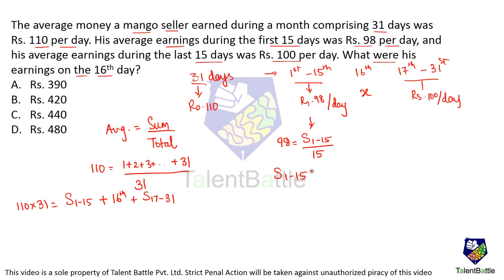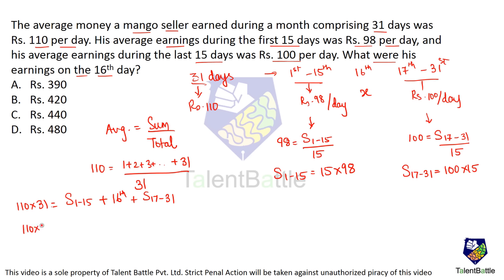Summation of the first 15 days = 15 × 98. Summation of the last 15 days (day 17 to 31) = 15 × 100. Substituting: 110 × 31 = (15 × 98) + x + (15 × 100). Taking 15 common on the right: 15 × 198 + x. So 3,410 = 15 × 198 + x.